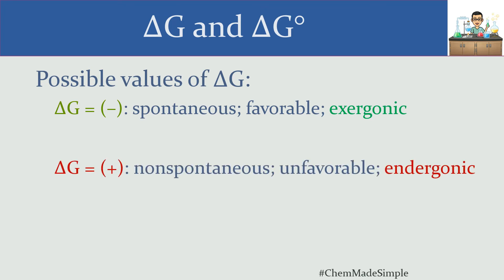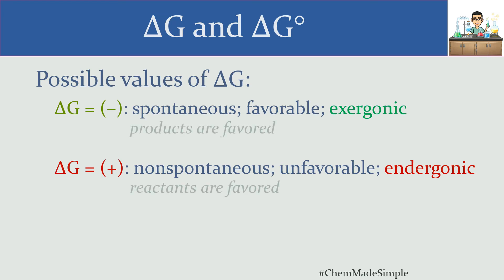A positive delta G indicates the opposite — the reaction is not going to happen on its own; it's unfavorable, and we say it is endergonic. 'En' means something is entering, so there's an overall influx of energy, which works against us by decreasing stability. Exergonic and endergonic refer to delta G, whereas exothermic and endothermic refer to delta H. When talking about delta G, make sure you use exergonic and endergonic. A negative delta G means we're favoring products; a positive delta G means we're favoring reactants.